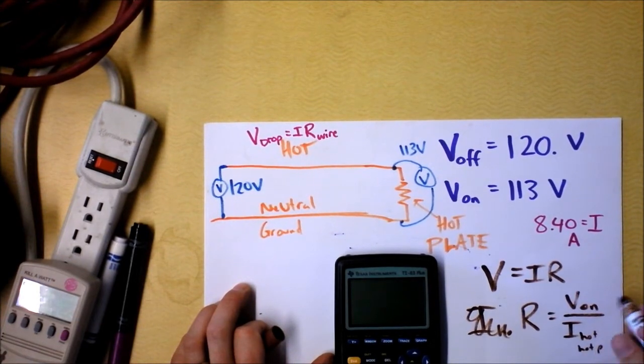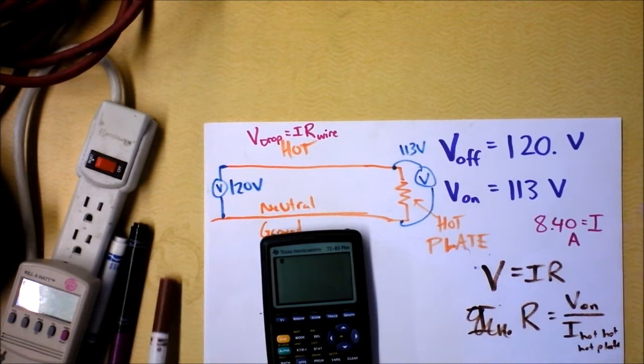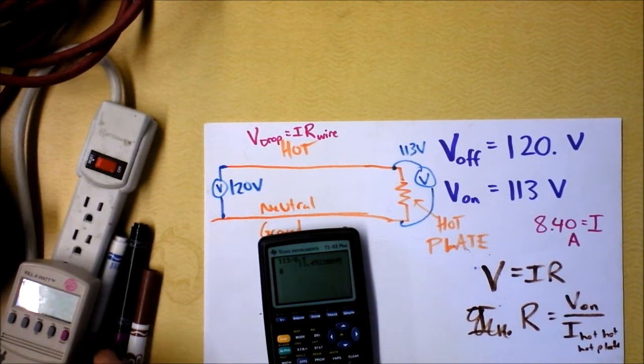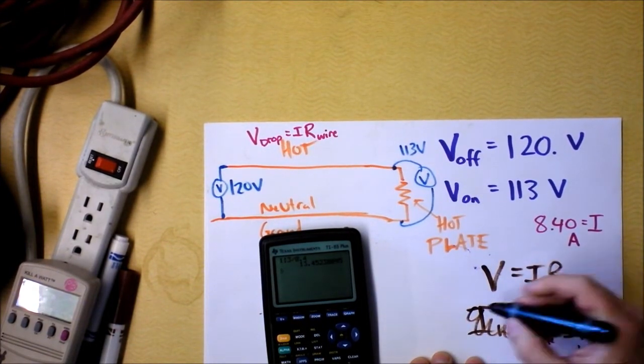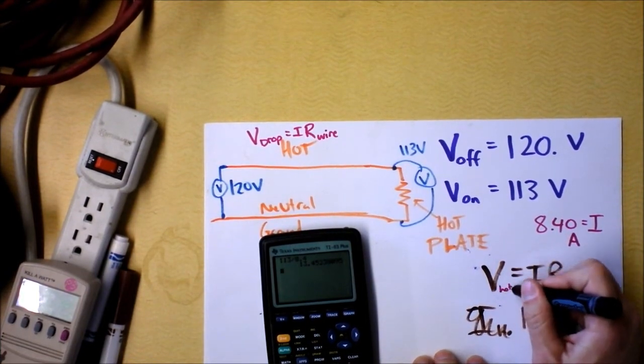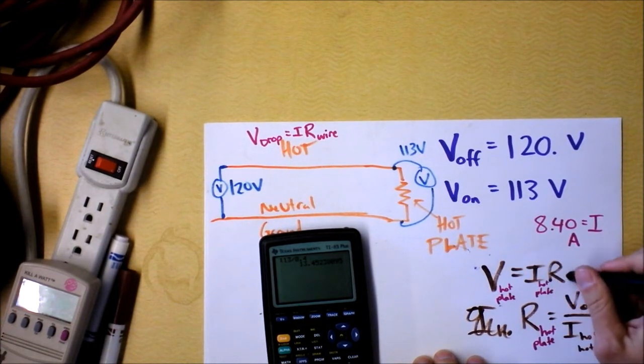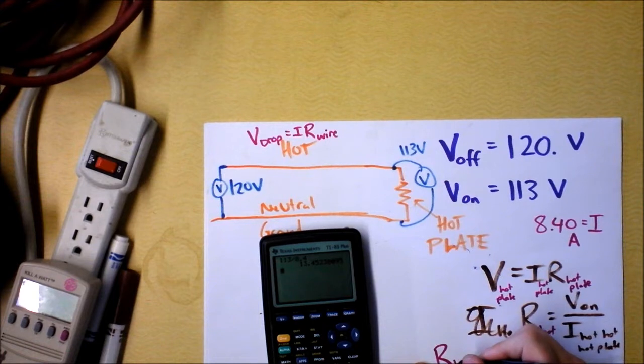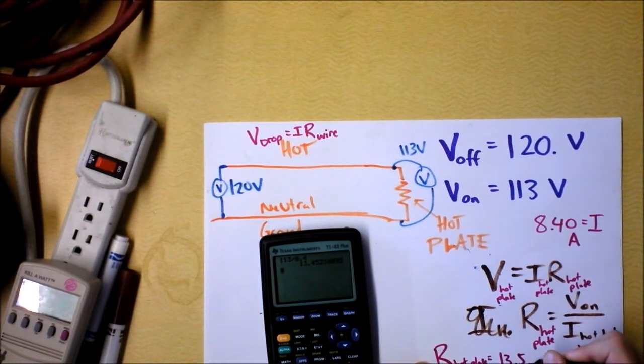And then that'll be divided by the current in the hot plate. The current through the hot, hot, hot plate, it is, trust me, it's a really hot, hot, hot plate. We can find that. We can take the voltage on, which is 113 volts, and we can divide that by the current while it's on 8.4 amps. And I'm finding the resistance of the hot plate. This is the resistance of the hot plate, because we've used this as the voltage at the hot plate, and the current through the hot plate. The resistance of the hot plate is, in fact, 13, and we'll go ahead and round up, 13.5 ohms.